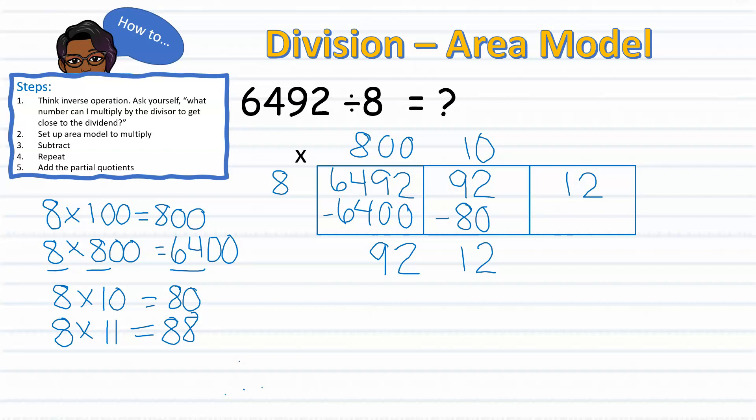Now that we have extended our area model, we are now ready to continue with division. I will ask myself, what number can I multiply by 8 to bring me as close to 12 as possible? Since I know that 1 times 8 equals 8, I will now subtract it from 12, leaving me with 4. Since my 4 is smaller than my divisor, I know that I am done dividing. So the 4 will serve as my remainder.